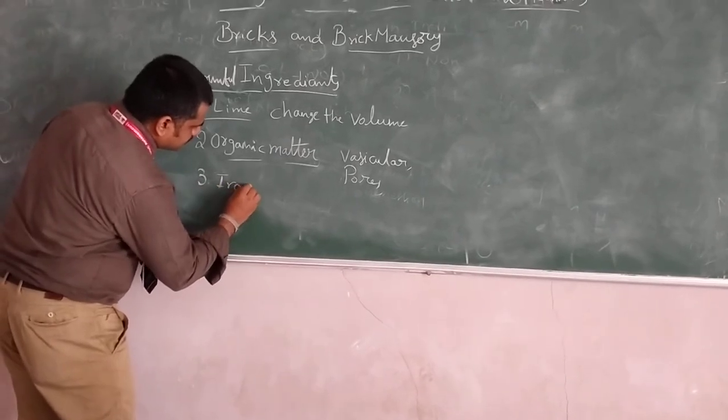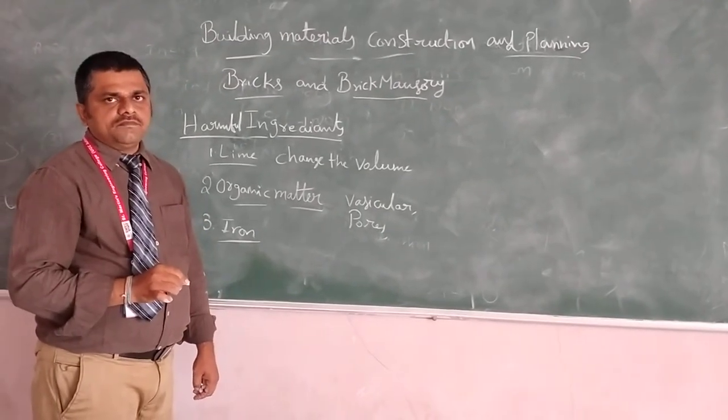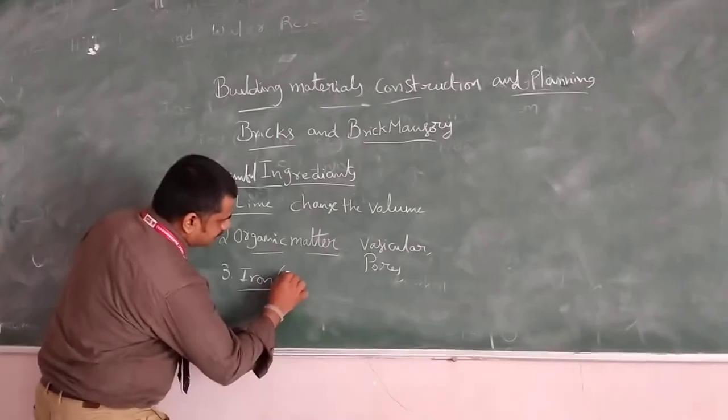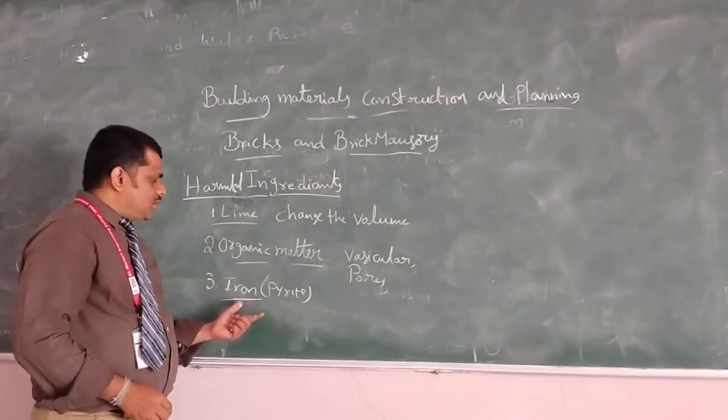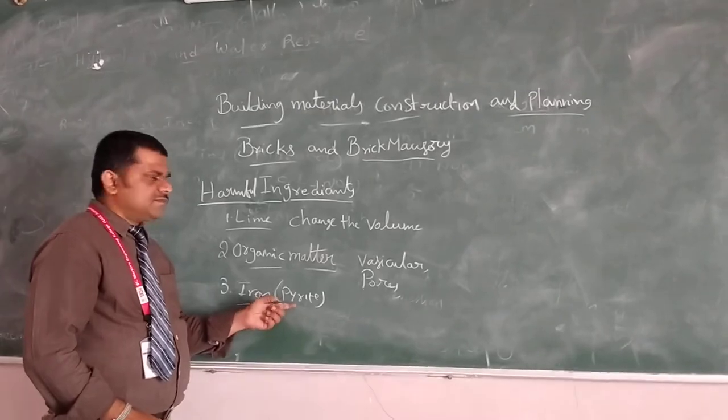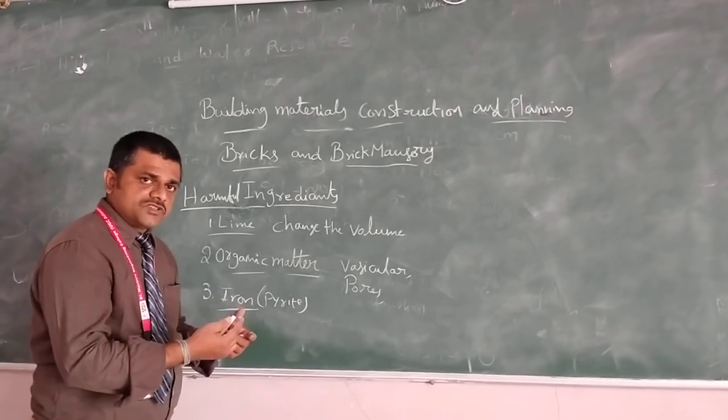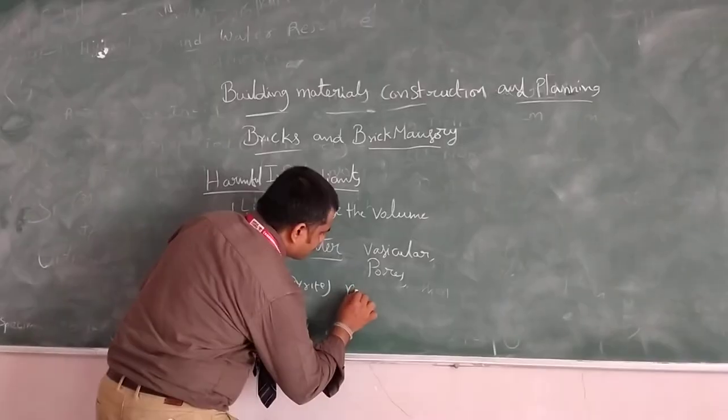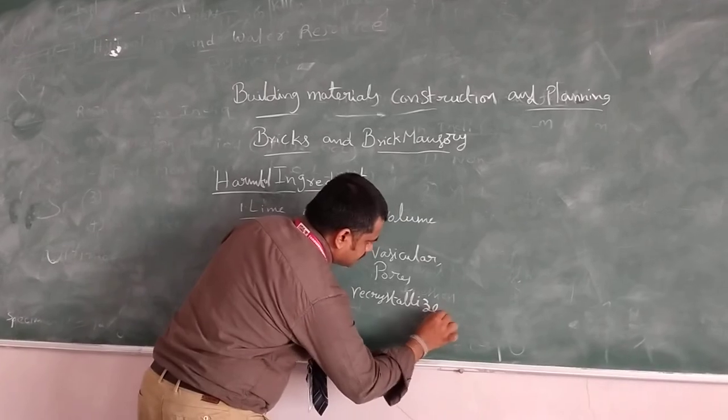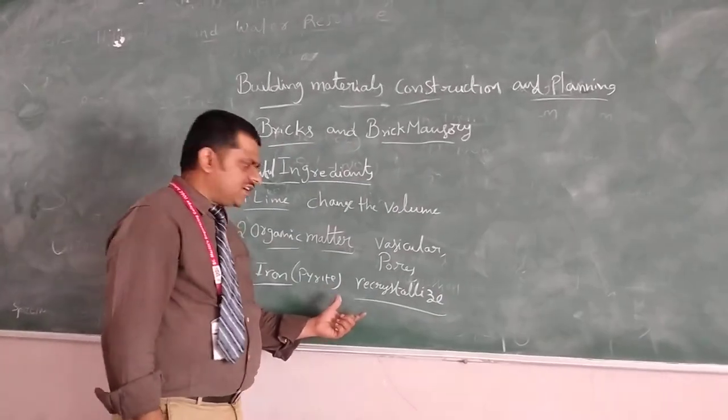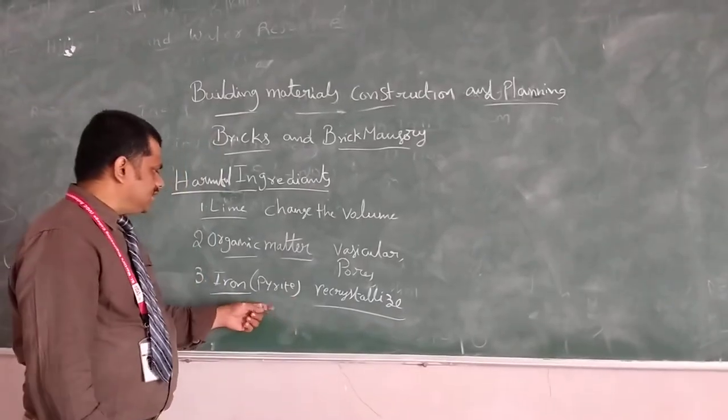In iron, there are different types of iron or metal. In that, the pyrite is very dangerous. Why it is dangerous? Once it is getting burned, iron material, this pyrite acts like a crystallization. Slowly, it converts and the materials are giving them some strength and thus convert into recrystallize.